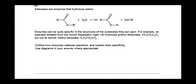Esterases are enzymes that hydrolyze esters. The equation shows an ester converting into a carboxylic acid and alcohol. Enzymes can be quite specific in the structures of the substrate they act upon. For example, an esterase isolated from the mold Aspergillus niger will hydrolyze phenyl ethanoate but not its isomer methyl benzoate. Outline how enzyme-catalyzed reactions work and explain their specificity, using diagrams where appropriate.